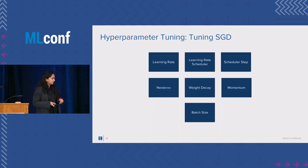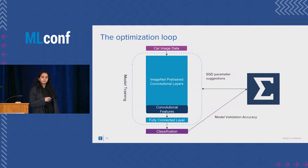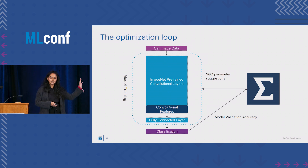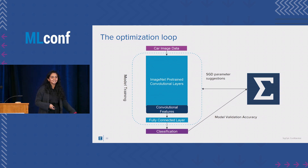These are the hyperparameters we're going to tune — stochastic gradient descent, just like your classic tuning approach. In our optimization loop, SIGopt provides stochastic gradient descent parameters, we train our model, and then return our model's validation accuracy. SIGopt then provides another set of parameters. We're in this iterative loop where SIGopt is learning which configurations work best, and our model's accuracy hopefully increases over time.